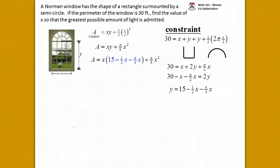We have x times that formula, which is for y, and then we add pi over 8 x squared. Distributing, we have x times 15, x times minus one half x, x times minus pi over 4 x. Putting terms together that are alike, we have all these x squared terms. These two together are minus an eighth of pi, and we have minus half of x squared. We can put this together as 4 plus pi all over 8, so A equals 15x minus the quantity 4 plus pi over 8 x squared.